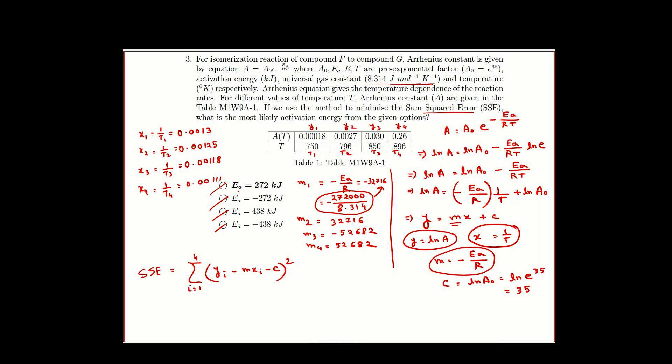Here for different options we are getting different m values. SSE for option 1, for 4 different options we have to calculate the SSE and we have to see which one is the minimum. So SSE for option 1 will be summation i equal to 1 to 4 of yi minus m1 xi minus c whole square.